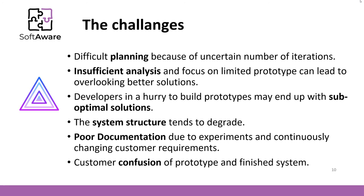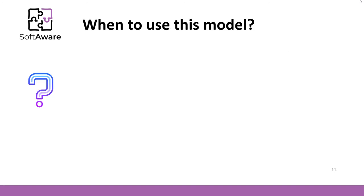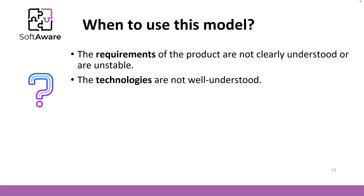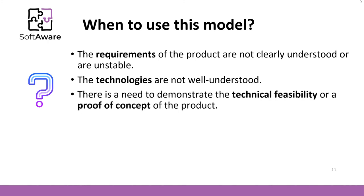There is usually a long way from the prototype to the complete software. This model is not used frequently and has several drawbacks, but it does not mean that this model is not useful. We should use this model when facing uncertain things such as obscure or unstable requirements, new technologies, or other uncertain factors. Prototyping allows removing such opposing phases of a project. Therefore, it is an excellent model to demonstrate the technical feasibility or proof of a product's concept.